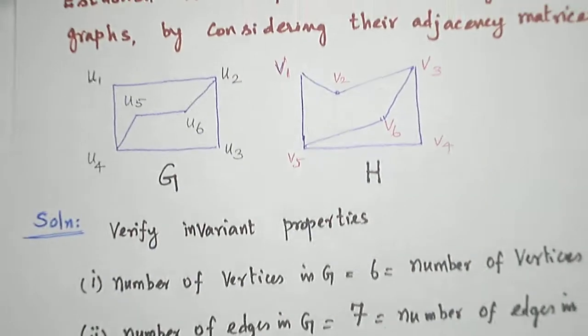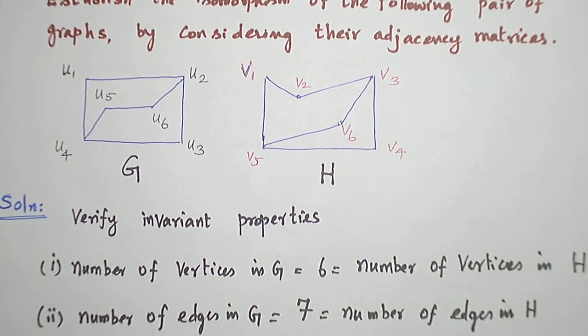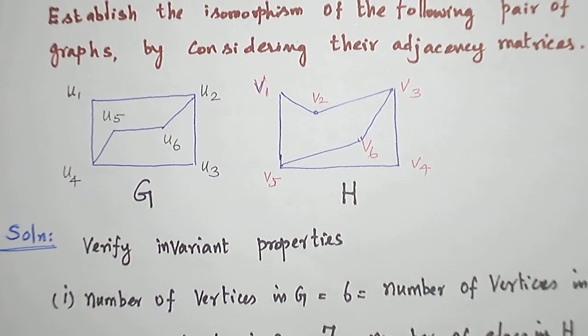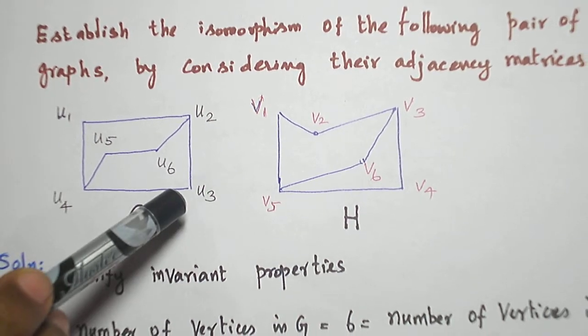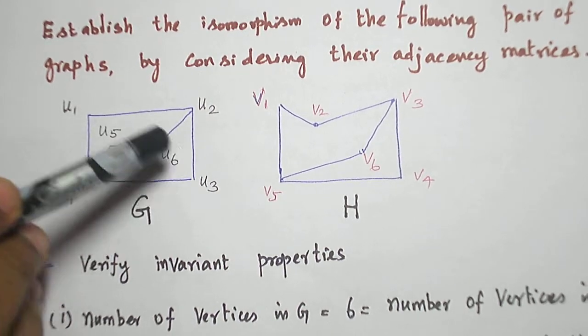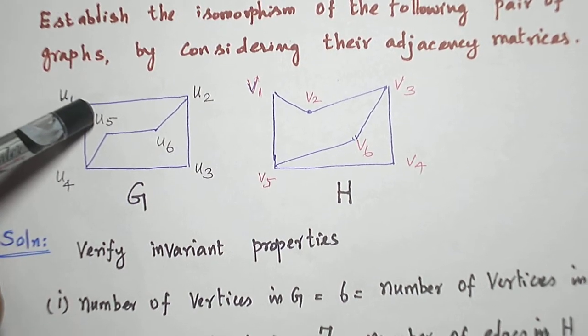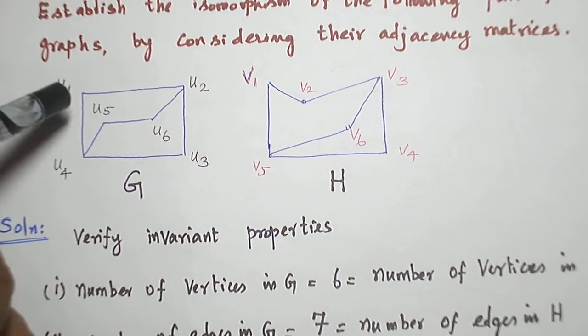look at the degree-2 vertices. There are four vertices. Of them, two vertices play a crucial role, a unique role. Look at the vertices. U3 and U1. These are the degree-2 vertices and they are adjacent to degree-3 vertices on both sides.